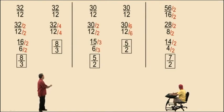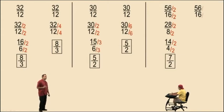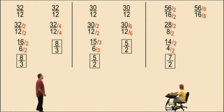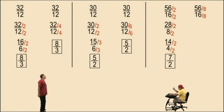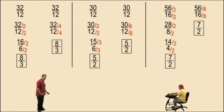Notice we divided by 2 three times. 2 times 2 times 2 is 8 — that means initially we could have divided by 8 and got the answer in one step. That's why it's important to know your times tables: 8 times 7 is 56 and 8 times 2 is 16, so 56 divided by 8 is 7 and 16 divided by 8 is 2. Remember, you've got to practice.